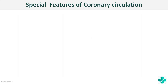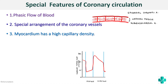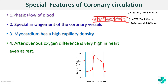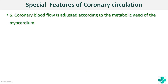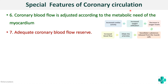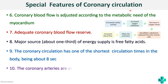To summarize, when a question on special features of coronary circulation is asked, first draw the diagram of coronary circulation, then write around ten points: phasic blood flow with graph; special arrangement of coronary vessels with diagram; high capillary density with shortest diffusion distance; high arteriovenous oxygen difference even at rest; autoregulation via myogenic theory; metabolic adjustment with flow chart; adequate coronary blood flow reserve; free fatty acids as major energy source; shortest circulation time; and that they are end arteries.